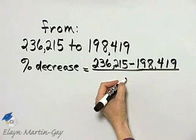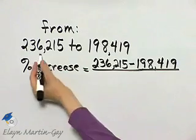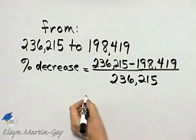and then remember you write that actual decrease over the original amount, the original amount being the 236,215.